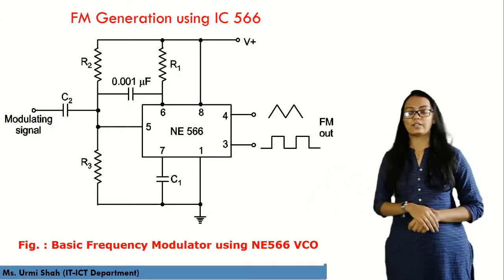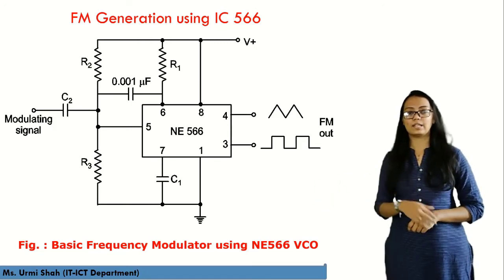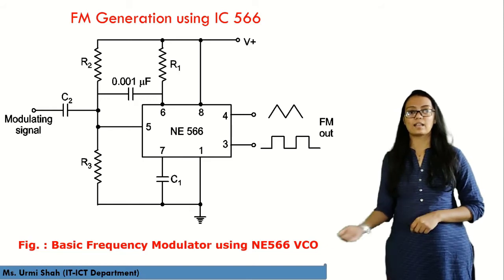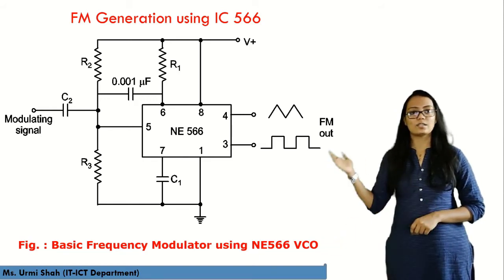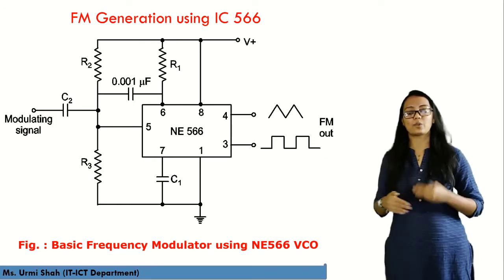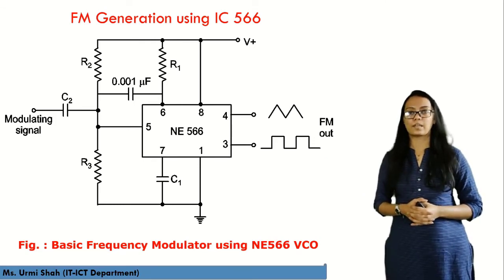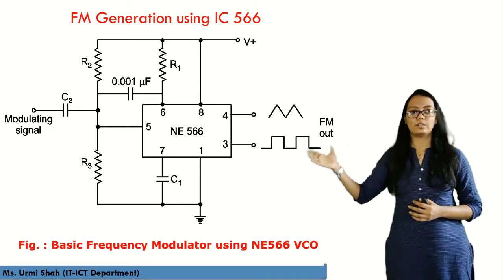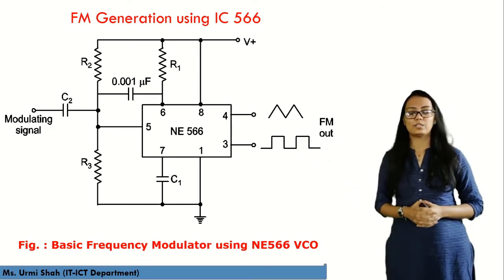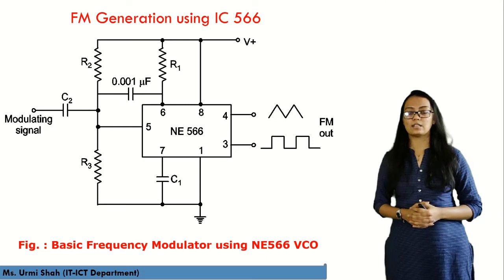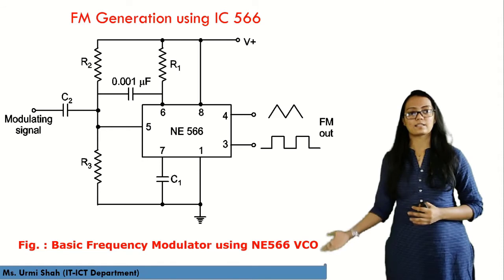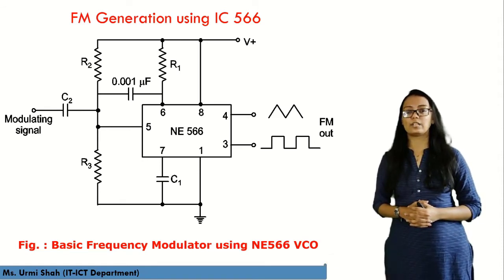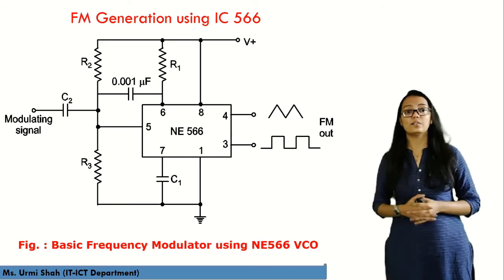The IC available in the market for a basic frequency modulator is the NE566 voltage-controlled oscillator (VCO), designated IC566. The modulating signal is provided as input to this IC, which converts it into the FM output. This is how market-ready FM generation is achieved using IC566.